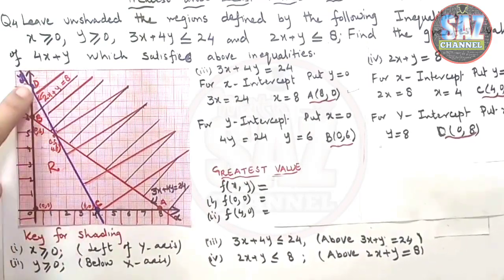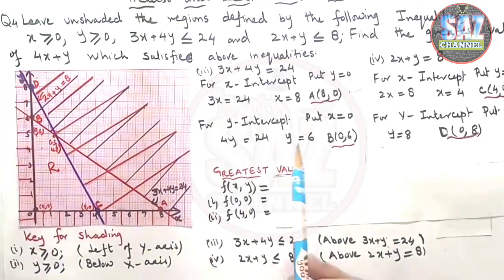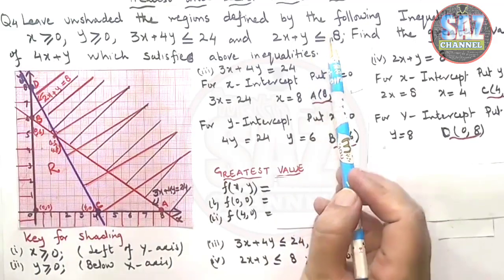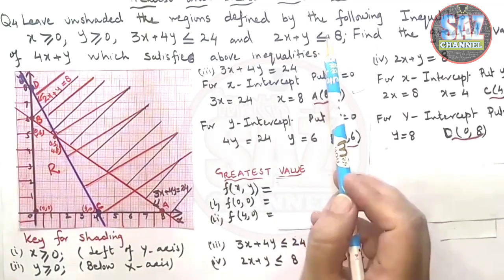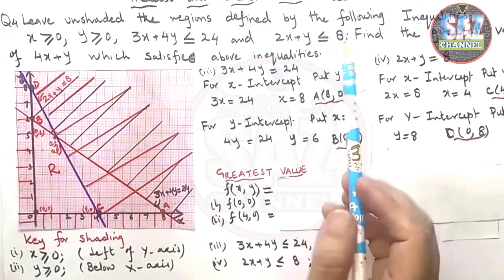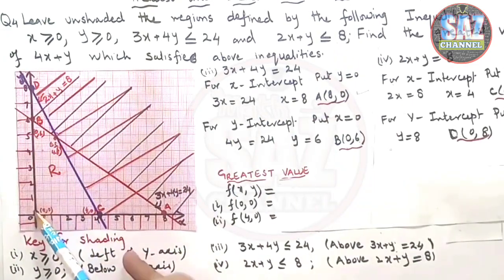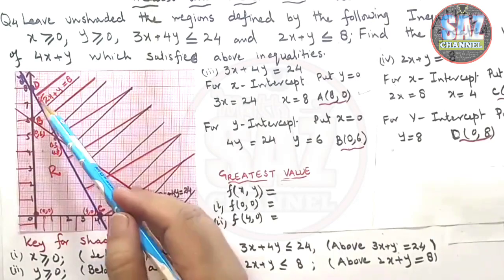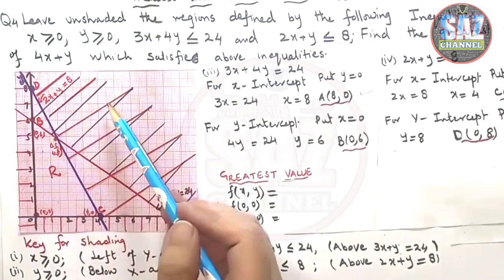Then draw the line which will pass through these two points and now see in actual condition, we need the region less than equals to 8. So I need the region which is lesser than this sign. So I will be shading above this line.